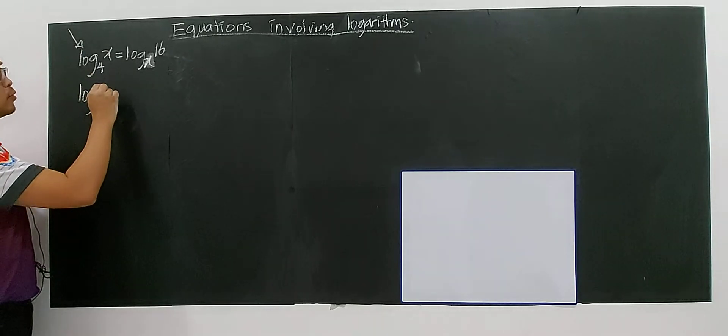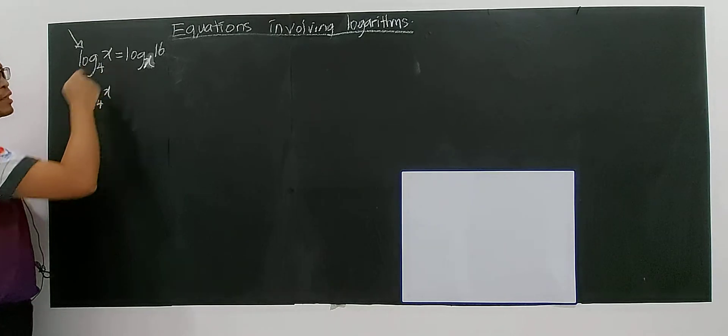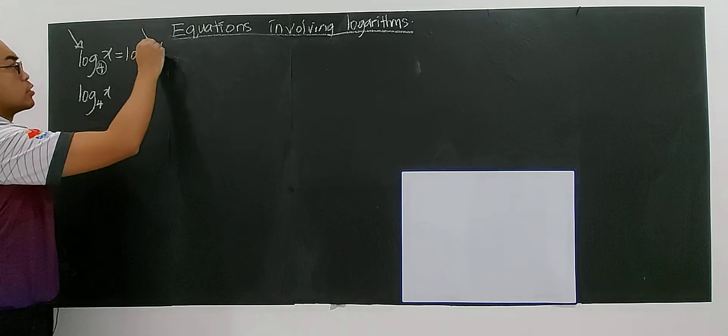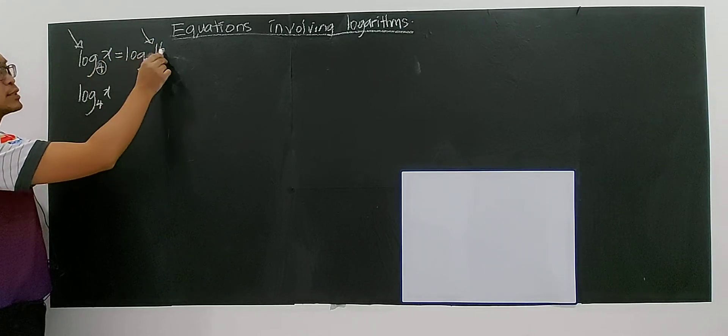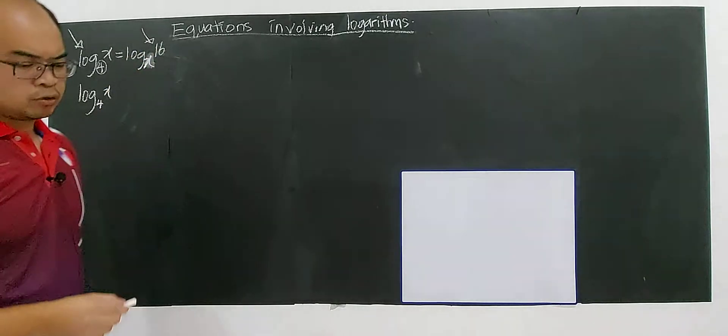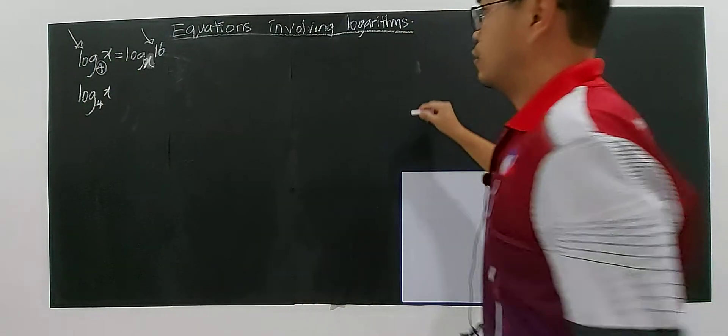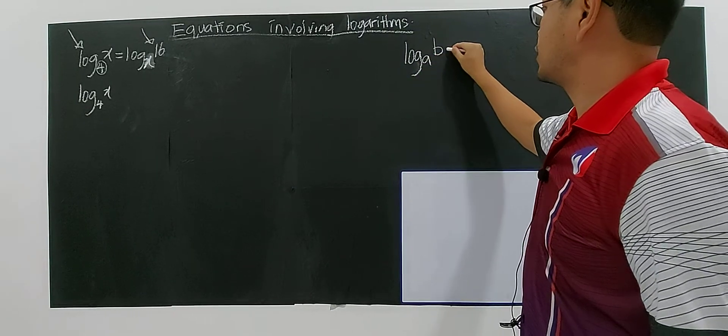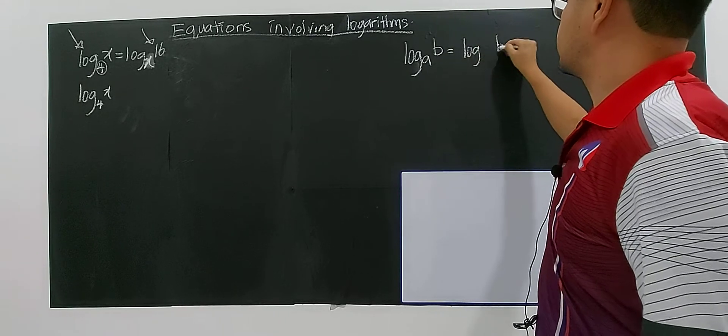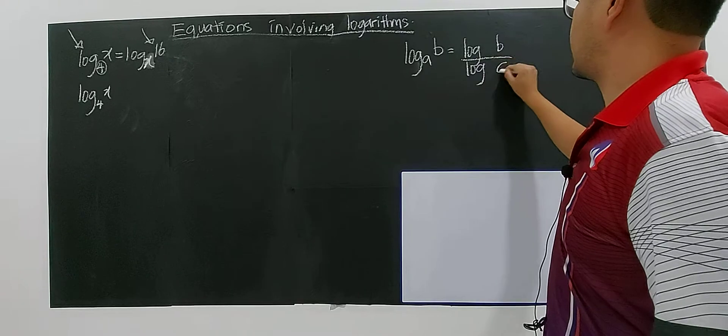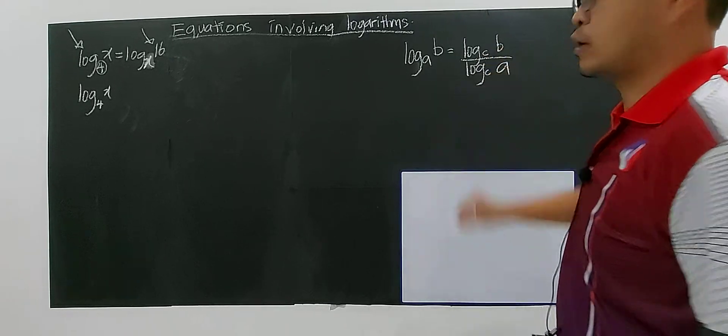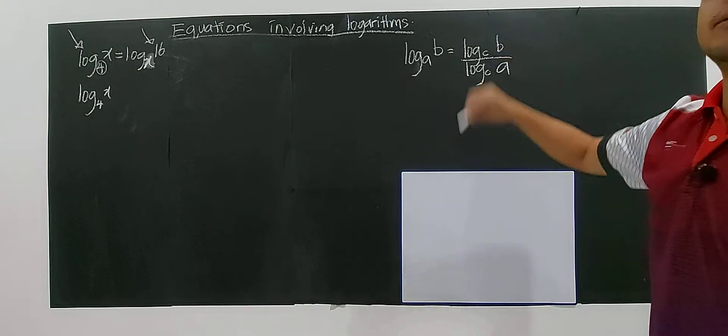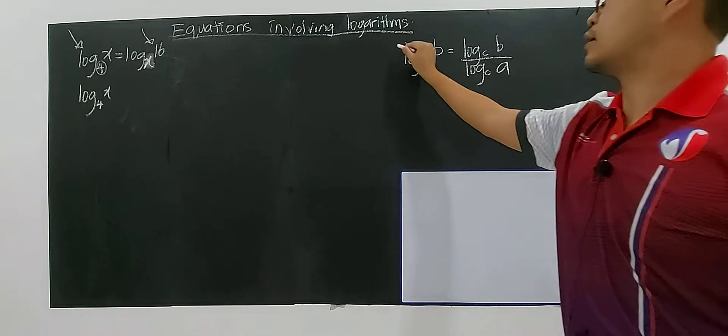For example, log X base 4, I'm not going to modify this because there's a number 4. This is the one that I need to modify because 4 is the base for 16. So 16 is the one that need to convert. What formula is involved for this? I may revise these two formula.